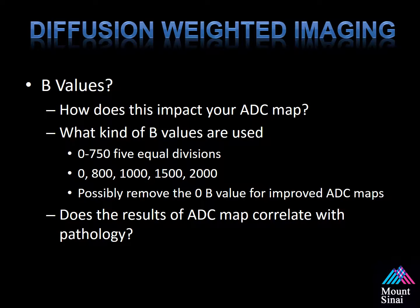B-values used can include 50, 500, 1000, and 1500, which is what we use at our program. However, it does vary from institution to institution. The common question is whether the ADC maps created from diffusion-weighted images correlate with prostate cancer histopathology. They do, and I will cover that a little bit later in the talk.